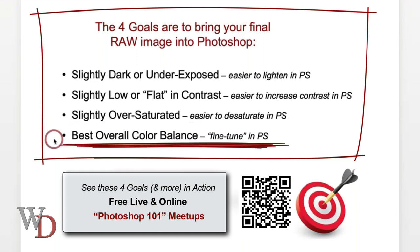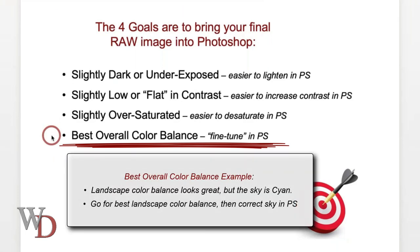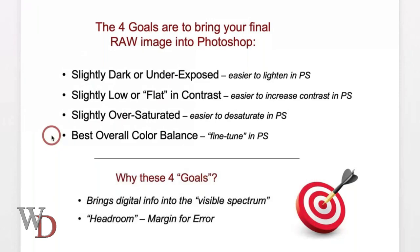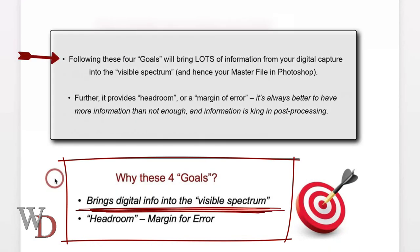The fourth goal is best overall color balance, because you can fine-tune individual areas in Photoshop. For example, if you have a landscape shot where the color balance looks great but the sky is cyan, go for the best landscape color balance and then correct the sky in Photoshop as necessary.